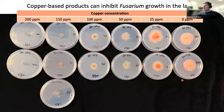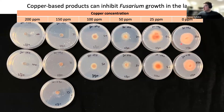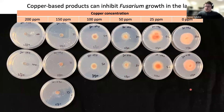There are some products that can control Fusarium. In a lab in vitro assay, copper was shown to inhibit Fusarium growth in culture. Fusarium colonies on media with no copper grew normally, while increasing concentrations of copper showed progressively smaller fungal colonies, demonstrating growth suppression. So there are some potential treatment management strategies for these pathogens.